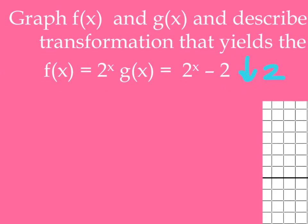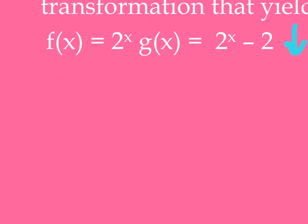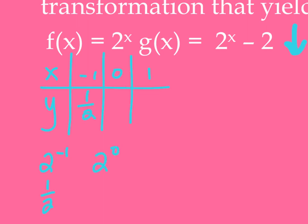So when I graph f(x) equals 2 to the x, I would do it with the t-chart. I'm going to plug in negative 1, 0, and 1. 2 to the negative 1 becomes 1 half, 2 to the 0 is 1, and 2 to the first is 2.